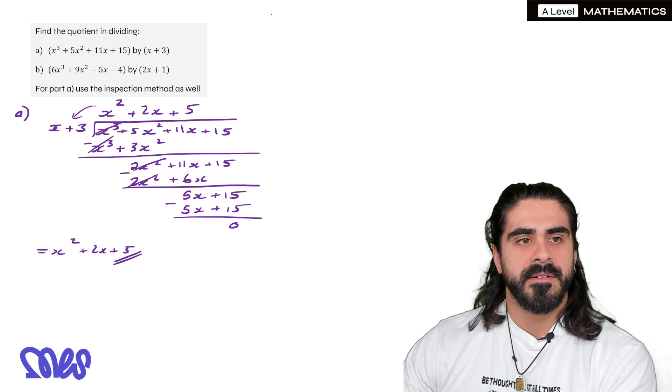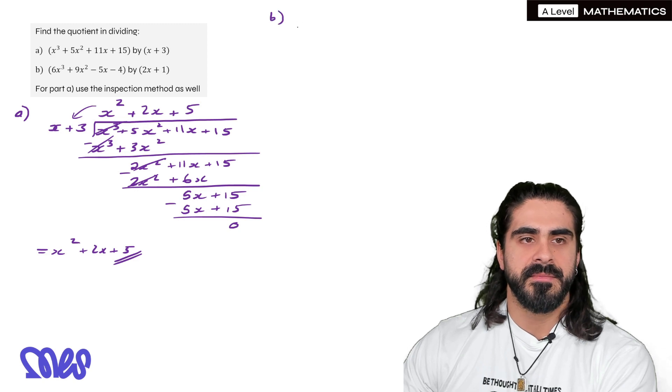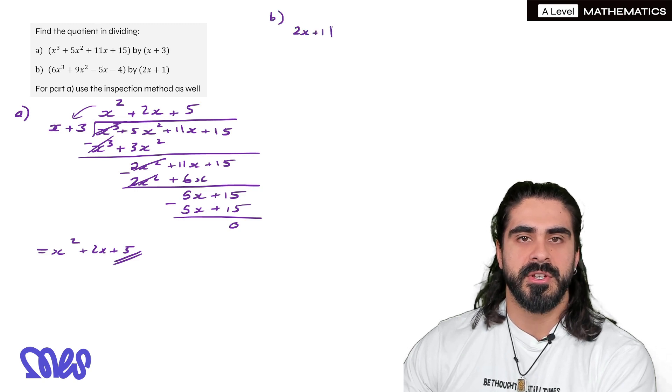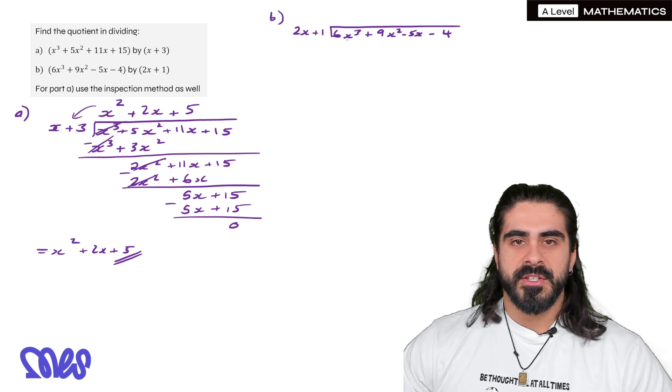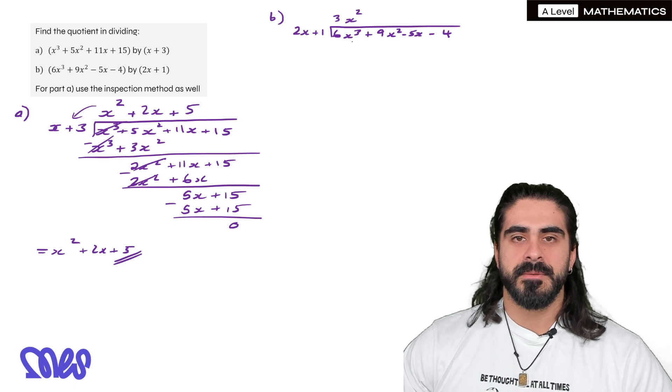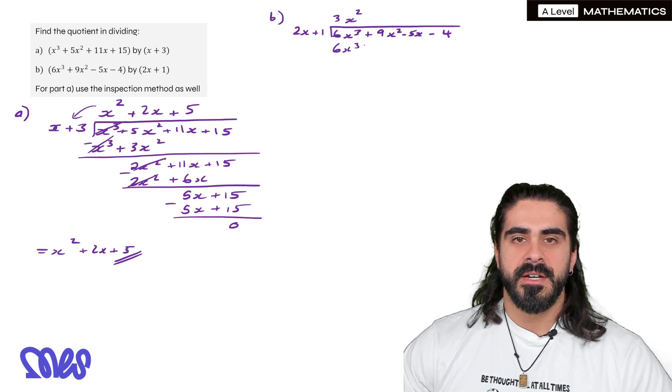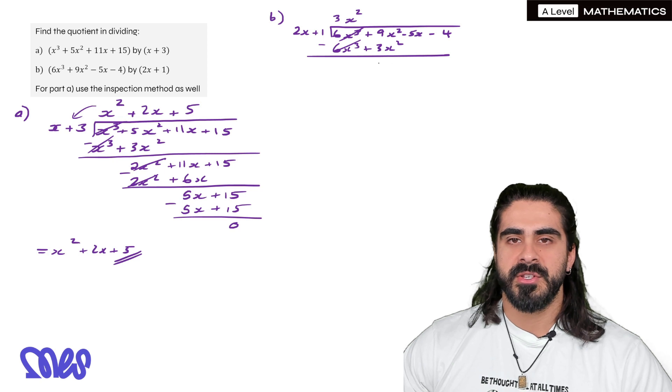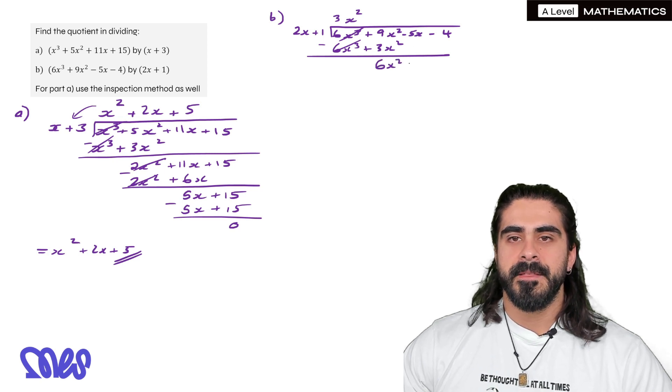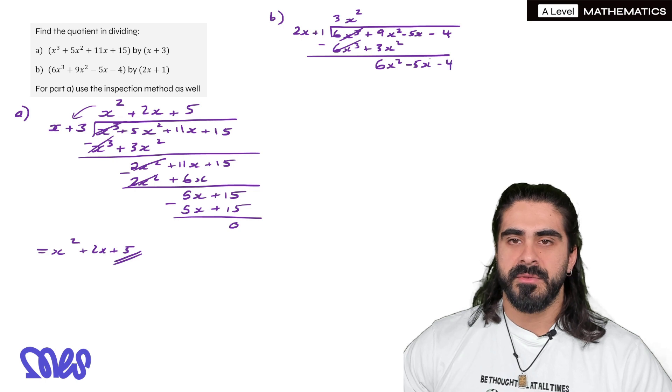Now for part b. Let's do the same thing. So we're saying how many 2x + 1's go into. So 2x. What do you have to multiply that by to give you 6x³? 2 times 3 gives you 6. And then we have x². Multiply. 6x³ plus 3x² minus them. These should always be canceling if you're doing it properly. Then 9x² minus 3x² is 6x². Then the minus 5x comes down. Minus 4.